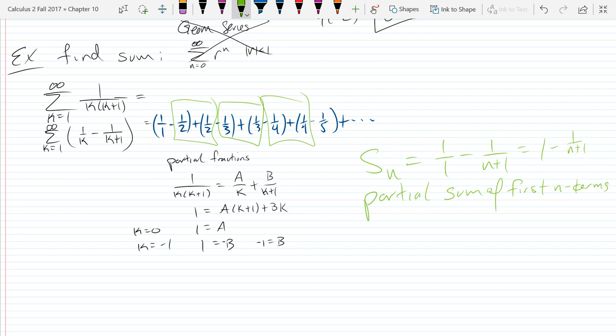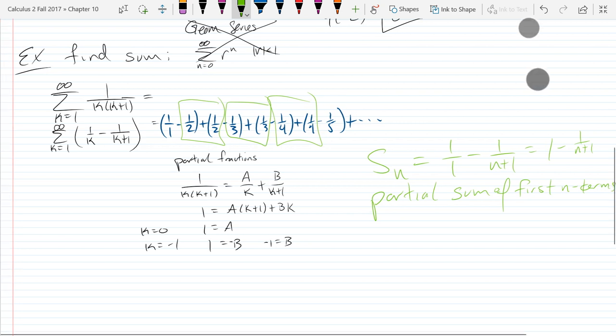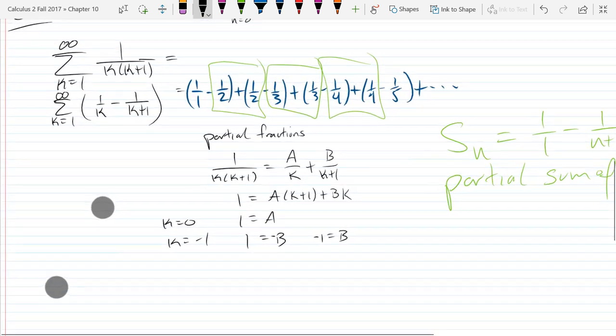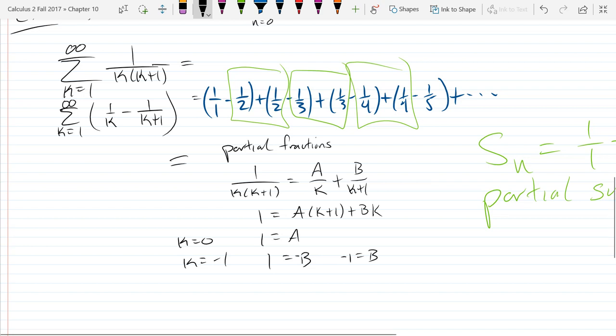And you can very easily take a limit of Sn. It should be really obvious what the limit of this will be when n gets really big. So the sum is equal to lim n approaches infinity of Sn.